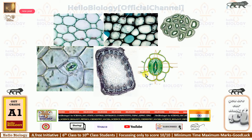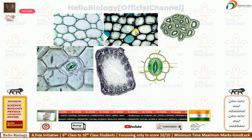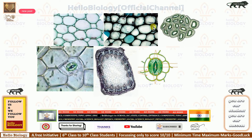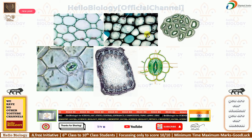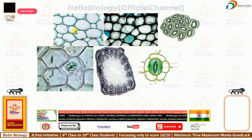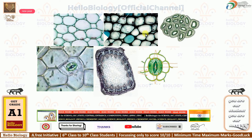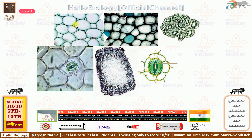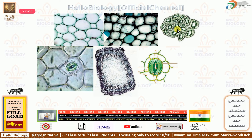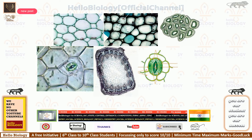Different kinds of tissues are there — parenchyma, collenchyma, and sclerenchyma. These are all ground tissues. In ground tissue, different types are present: parenchyma, collenchyma, sclerenchyma, aerenchyma, chlorenchyma, and storage tissue.